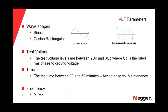The most important parameters in the VLF test are the wave shapes. The two most common wave shapes used are the sinusoidal wave shape and the cosine rectangular wave shape. Both have their own advantages and disadvantages. The sinusoidal wave shape units are lighter, smaller, and cheaper. Also, we can use the sine wave shape to do the tan delta test. The disadvantage of the sine wave shape is that at 0.1 Hz we have a limited test capacitance. The cosine rectangular wave shape units are heavier and more expensive, but the test capacitance at 0.1 Hz is larger.